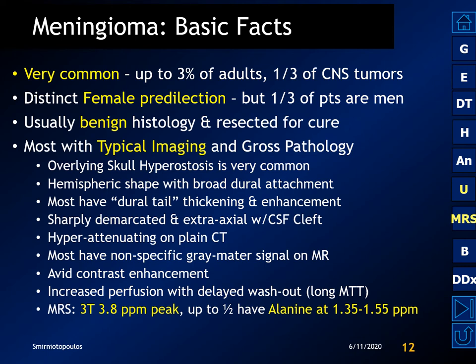They're sharply demarcated with an extra-axial CSF cleft. They're often hyper-attenuating on plain CT. Most have a nonspecific gray matter signal on MR. They have avid contrast enhancement, increased perfusion with delayed washout, a long mean transit time on MR, and two specific peaks on MR spectroscopy at 3 Tesla — one at 3.8 ppm, and about half have an alanine peak between 1.35 and 1.55 parts per million.